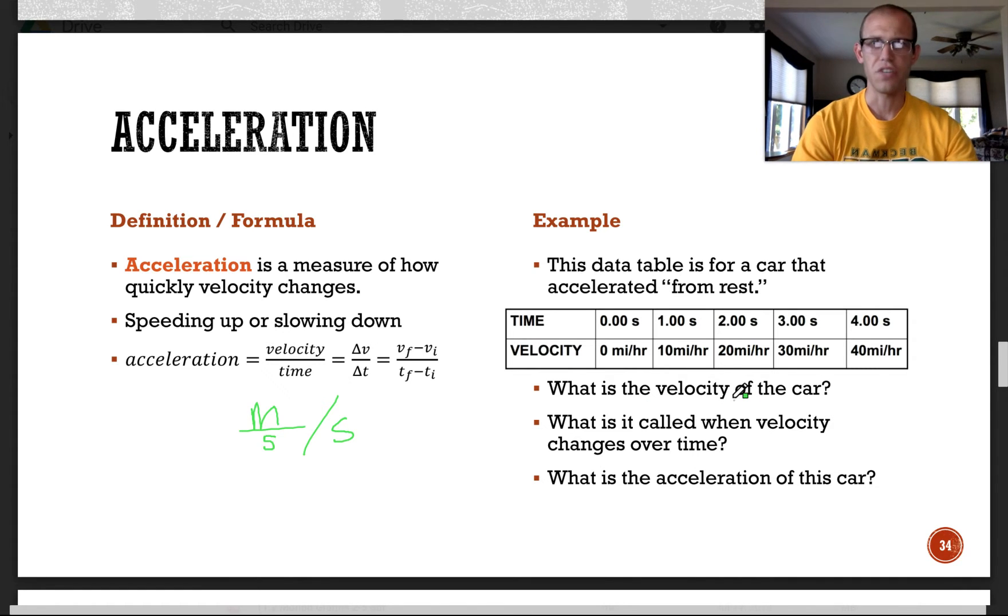The velocity is changing. There is no single velocity of the car. We could find an average velocity by adding up all of these and then dividing by how many we have. But that doesn't give us what the velocity is. So a little bit of a trick question there. What is it called when the velocity changes over time?